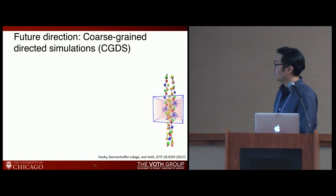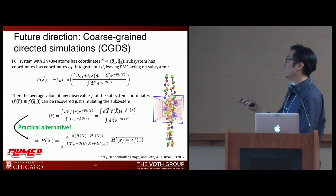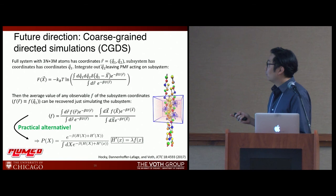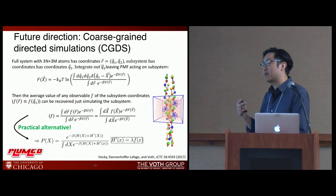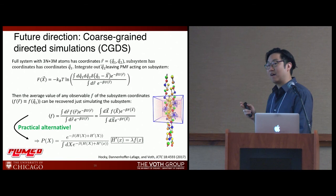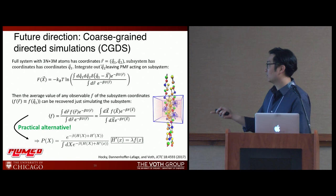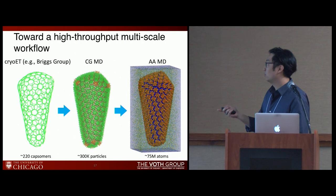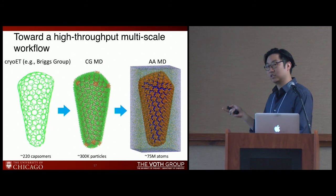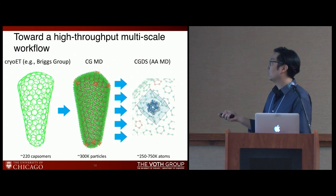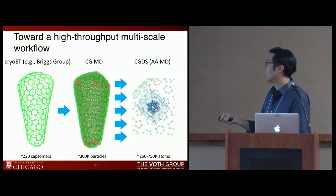For the final part, I'll briefly describe an idea we call coarse-grain-directed simulation. Given an overall structure such as the capsid, we want to simulate just a subset of atomic degrees of freedom while having it feel the overall environment — for example, representing monomers in a small box as if embedded in a filament environment. Rather than an all-atom simulation of 75 million atoms — which we could only do once or twice — because of the polymorphism of these structures we'd like to take an ensemble of trajectories at different curvature points, diving deep into atomic details through this coarse-grain-directed simulation approach.